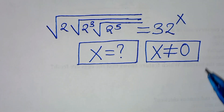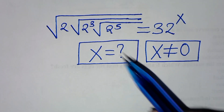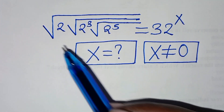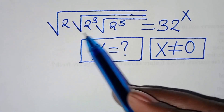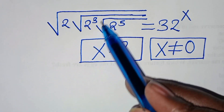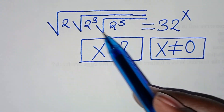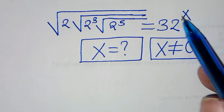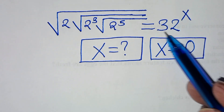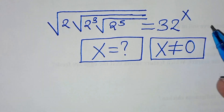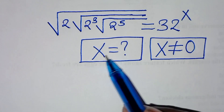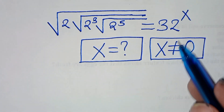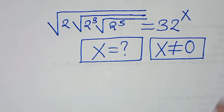Hello everyone, you are welcome to solve this nice square root math problem, which is the square root of 2 times square root of 2 to the power of 3 times square root of 2 to the power of 5. This is equal to 2 raised to the power of x. So what is the value of x here, given that x is not equal to 0?